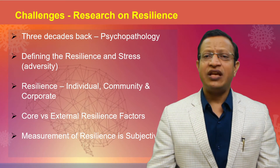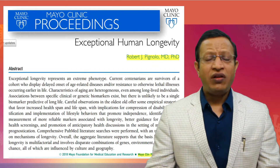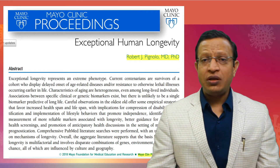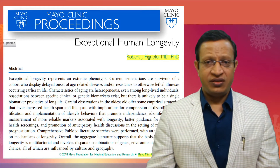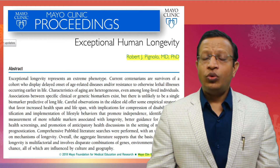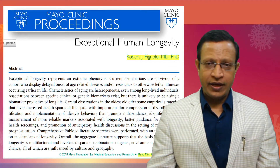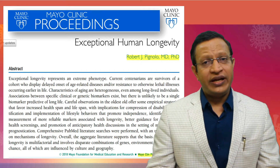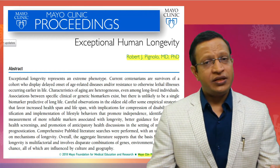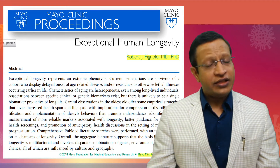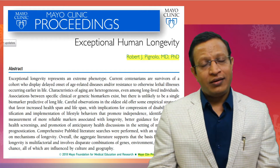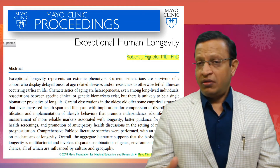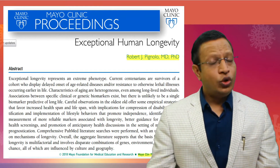There are various interesting studies published in scientific journals. One very important study by the Mayo Clinic talked about exceptional human longevity — they are also called super-agers or centenarians, people who lived more than 100 years. What are their genetic makeups, psychological factors, environment, and lifestyle? This whole study was published in 2019. Please do look into it — people working in resilience should know why some groups of people live more than 100 years and what their body makeup, constituents, and lifestyle are.